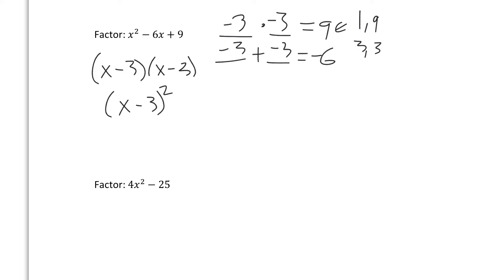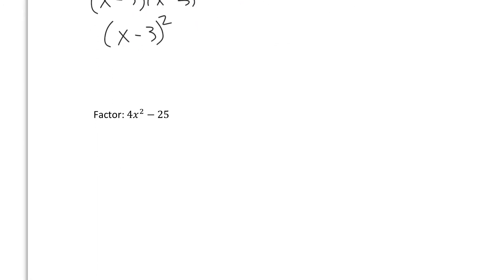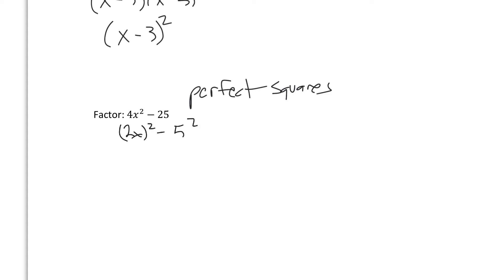Now let's try to factor 4x squared minus 25. This is a special factor because 4x squared and 25 are both perfect squares. So we have a difference of squares — we can write it as 2x all squared minus 5 squared. So our factoring is just 2x minus 5 times 2x plus 5.